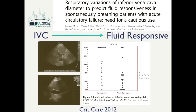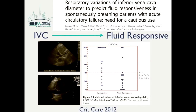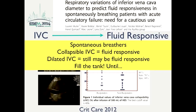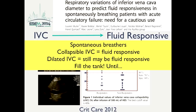In spontaneously breathing patients, a study evaluated 40 hypotensive patients for various reasons including sepsis, hemorrhage, and dehydration. The conclusion was that a collapsible IVC of greater than 40% is usually associated with fluid responsiveness, while a collapsible IVC of less than 40% does not exclude volume responsiveness. Therefore, a collapsible IVC supports giving fluids, but a dilated IVC does not rule out fluid responsiveness.